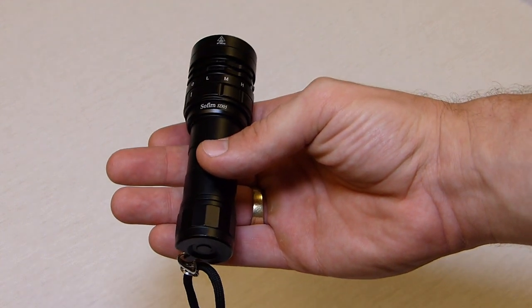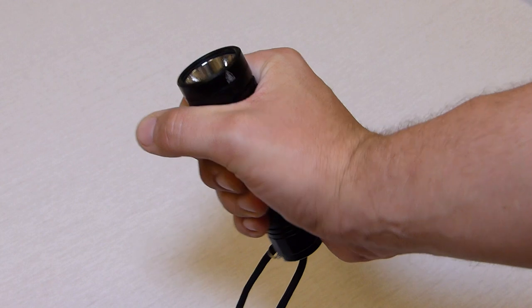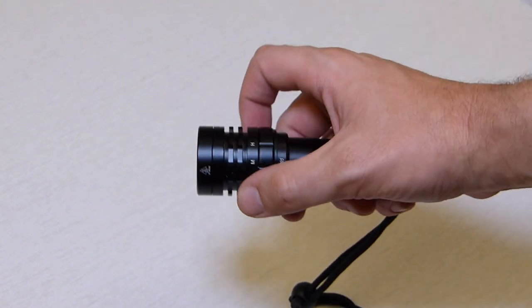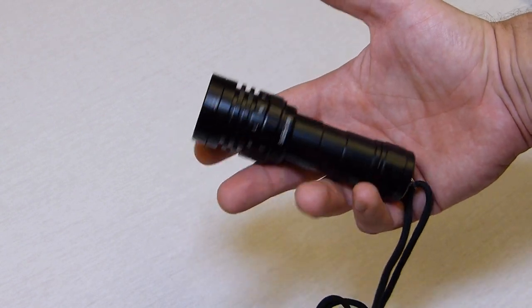Today I want to show you the Soferen SD05, a diving light, a very compact diving light powered by a very potent lithium-ion battery delivering up to 2,550 lumens.